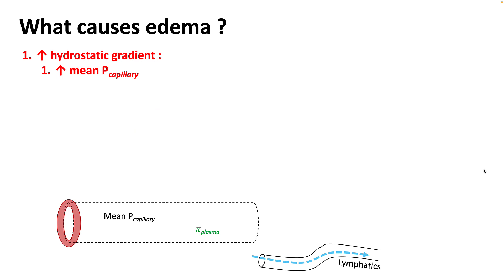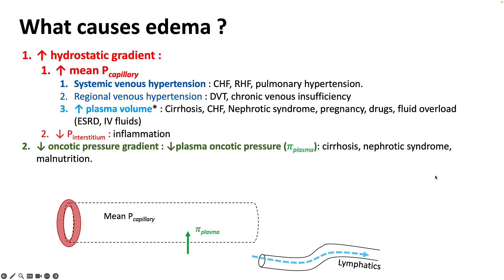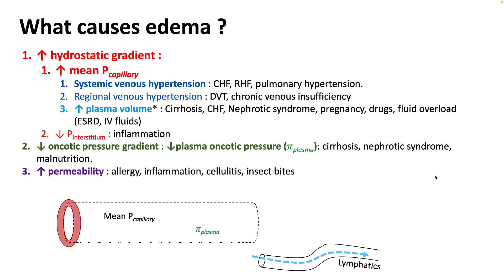So whenever you see edema, think about four factors. First, is there any increase in the hydrostatic gradient? This means asking whether your mean peak capillary pressure is high, which happens mostly because of problems with the venous side — think about systemic venous hypertension as seen in congestive heart failure, or regional venous hypertension as seen in chronic venous insufficiency. If you increase plasma volume, you will have increased mean peak capillary pressure, as seen in cirrhosis, heart failure, nephrotic syndrome, and fluid overload. You can also see decreased interstitial pressure in inflammatory conditions. Next, think about a decreased oncotic pressure gradient, which comes from decreased plasma oncotic pressures, as seen in cirrhosis, nephrotic syndrome, and malnutrition. Think about increased permeability as seen in cellulitis and inflammation. And finally, think about lymphatic issues — incompetent valves or obstruction. Once you have thought about these four pathophysiological mechanisms, you should be able to get a fair idea of where the problem lies.